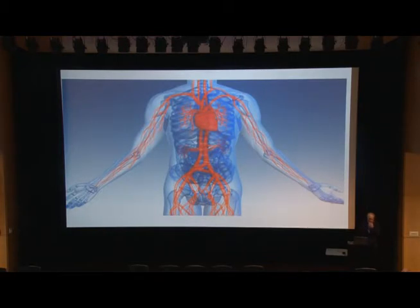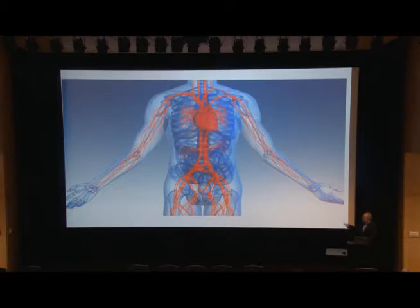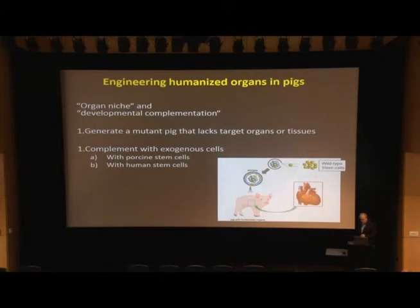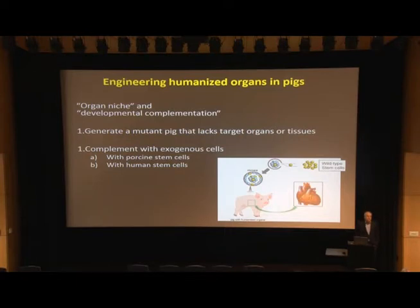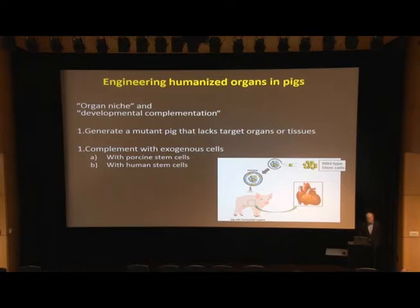We're interested in translating our basic science discoveries to impact clinical medicine, and I want to give you an update on our strategies to re-engineer the vasculature. We thought that ETV2 was an ideal candidate for identifying a pig model that completely lacked particular lineages. This would allow, using interspecies chimerism, a donor cell population to have an advantage because the host cells were unable to give rise to those particular lineages.